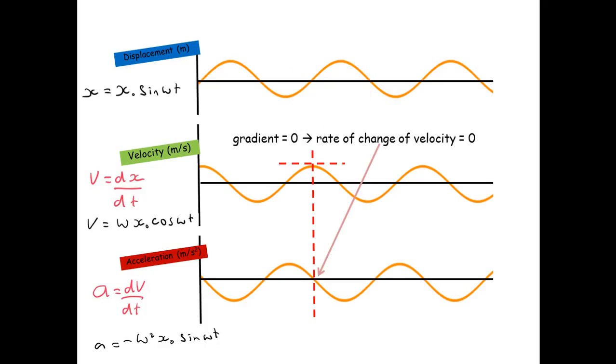Well let's have a look at velocity and acceleration. So here the gradient is zero. So the rate of change of velocity is zero. You can see on the acceleration graph it's passing through zero at this point.